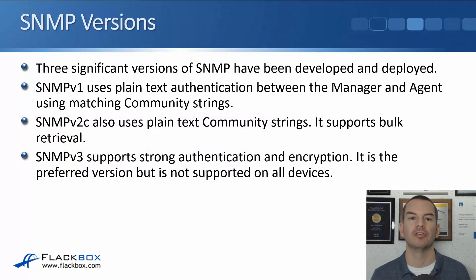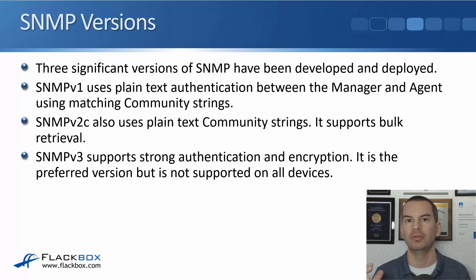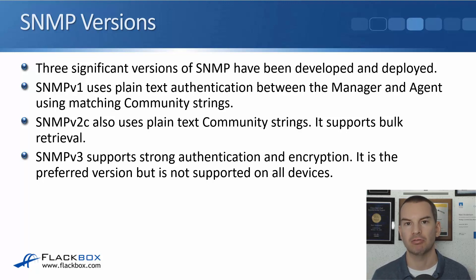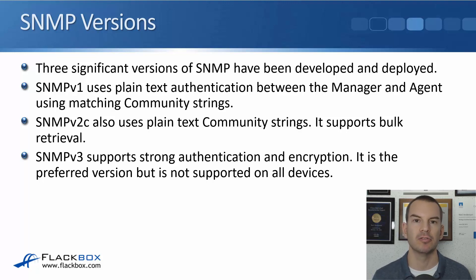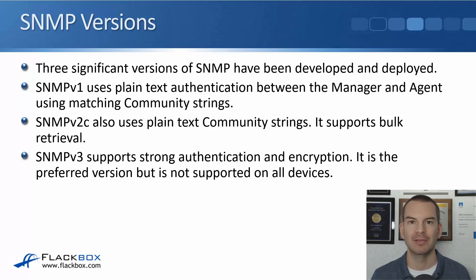There have been three major SNMP versions. SNMP version 1 uses plain text authentication between the manager and agent — it is not encrypted, so anyone sniffing the traffic can read it. The authentication method used is community strings, which act like a password. SNMP version 2C also uses plain text community strings, but its main advantage over version 1 is support for bulk retrieval, allowing a single request for multiple pieces of information at once, making it more efficient.